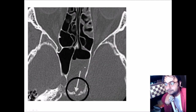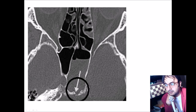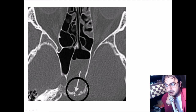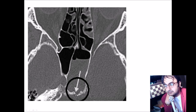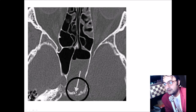Here is another example of CSF leakage, this time at the level of the sphenoidal sinuses. You can see the maxillary sinuses, and here the posterior aspect shows the sphenoidal sinuses. The left sphenoidal sinus is opacified, and you can appreciate a small discontinuity or defect at the posterior aspect of the sinus — this is the site of CSF leakage.